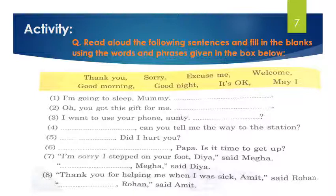The third sentence is: 'I want to use your phone, auntie.' If we want to use anybody's things, we use the phrase 'May I?' — 'I want to use your phone, auntie. May I?' The fourth sentence is: 'Dash dash, can you tell me the way to the station?' When asking an unknown person, we use 'Excuse me.' So: 'Excuse me, can you tell me the way to the station?'